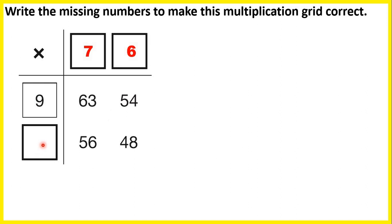Something times 7 is 56, so we can divide 56 by 7, and that gives us 8. Then we can check — we have 48 here, and that's the answer to 8 times 6.